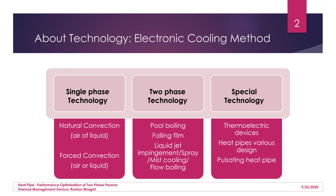Later on, a two-phase technology was developed — pool boiling, boiling film, liquid jet impingement, spray mist cooling, as well as flow boiling. This is the two-phase technology that has been mostly used for electronic cooling.